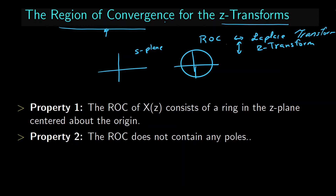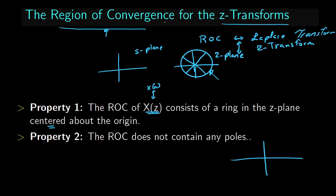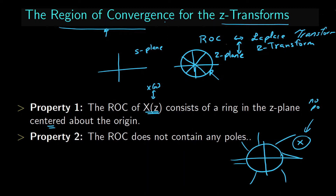Property number one states that the region of convergence of X of Z — the Z-transform of X of N in the time domain — consists of a ring in the Z-plane. We can observe one circular ring depicted in the ROC for the Z-plane, centered at the origin, so it is equidistant. Property two states that the ROC does not contain any pole.